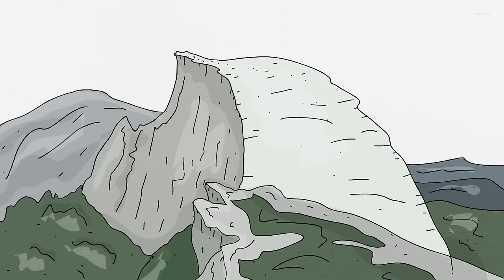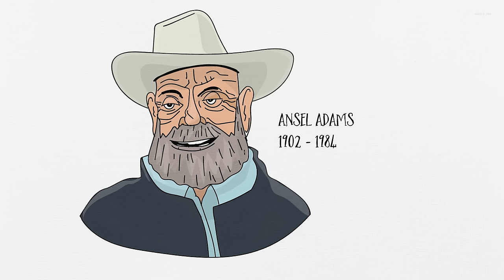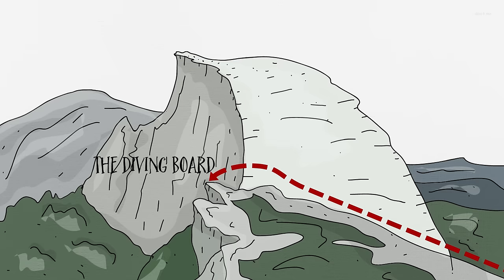Regardless of how you get there, once you're on top, make sure you know the difference between the visor and the diving board. This rocky outcropping here is called the visor. The diving board, where Ansel Adams took the picture Monolith Face of Half Dome on April 10th, 1927, is actually located on the shoulder of Half Dome way over here.